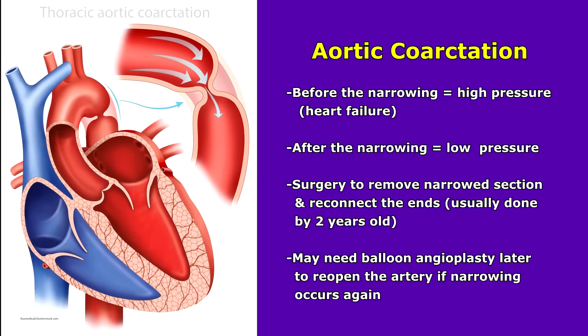Aortic coarctation is narrowing within the aorta. Before the narrowing, there's going to be high pressure, which can lead to heart failure. After the narrowing, the pressure will be low. Surgery can be performed to remove the narrow sections of the aorta and then reconnect the ends. This is usually done by two years old.